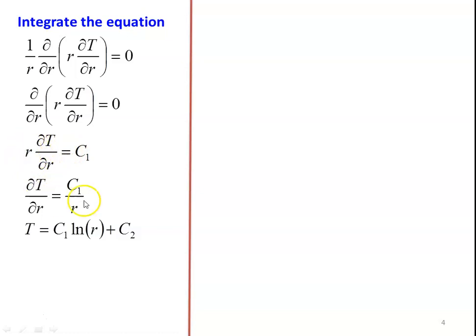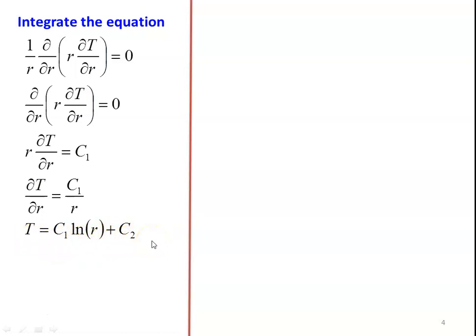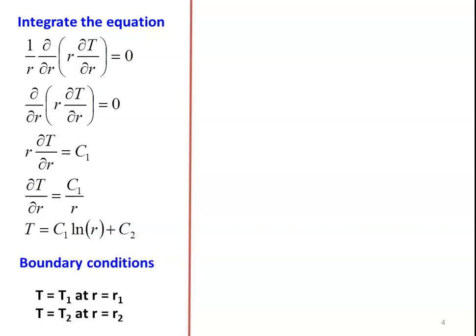Rearranging, ∂T/∂r = C1/r. Integrating again: T = C1 · ln(r) + C2. There are two constants C1 and C2, requiring two boundary conditions. Applying T = T1 at r = r1 and T = T2 at r = r2, we get: T1 = C1·ln(r1) + C2 and T2 = C1·ln(r2) + C2.